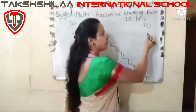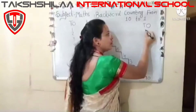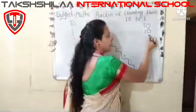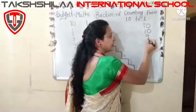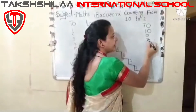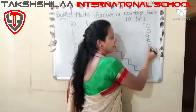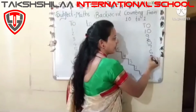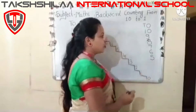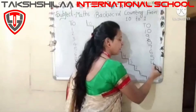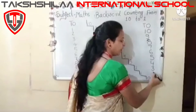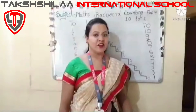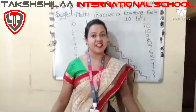Look at the board — backward counting. We will start from number 10, then 9, go back: 8, then 7, 6, 5, go back: 4, 3, 2, 1. This is backward counting.